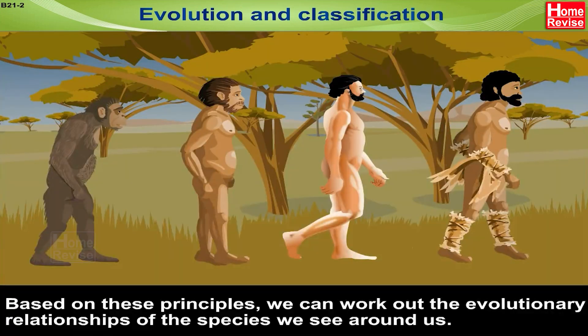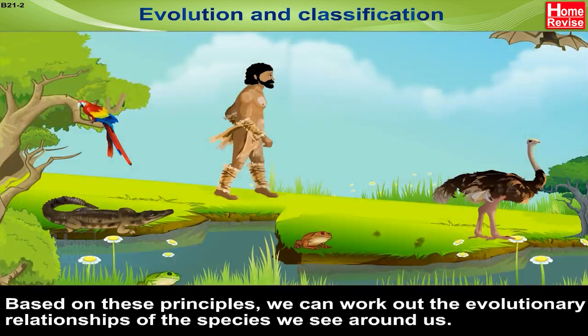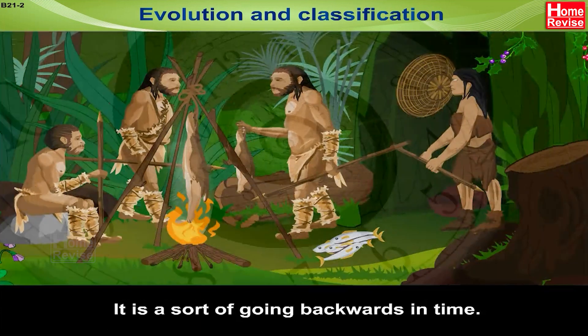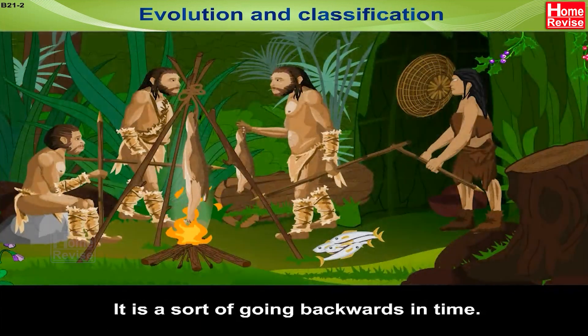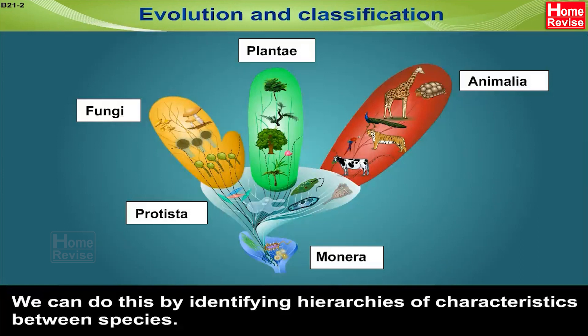Evolution and Classification. Based on these principles, we can work out the evolutionary relationships of the species we see around us. It is a sort of going backwards in time. We can do this by identifying hierarchies of characteristics between species.